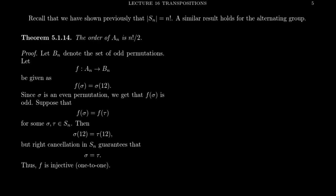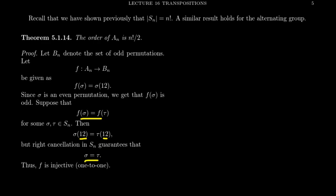Notice that we're going from A_n to B_n. If sigma is an even permutation, it has a factorization with an even number of transpositions. Adding one more two-cycle increases the number of transpositions by one, taking us from even to odd — so the output is an odd permutation. This is a well-defined map. This map is also one-to-one. Suppose two even permutations tau and sigma in A_n have the same image. If you multiply both sides on the right by (1 2), you can cancel it — since we're in a group, S_n. This gives sigma equals tau. So the map is one-to-one.